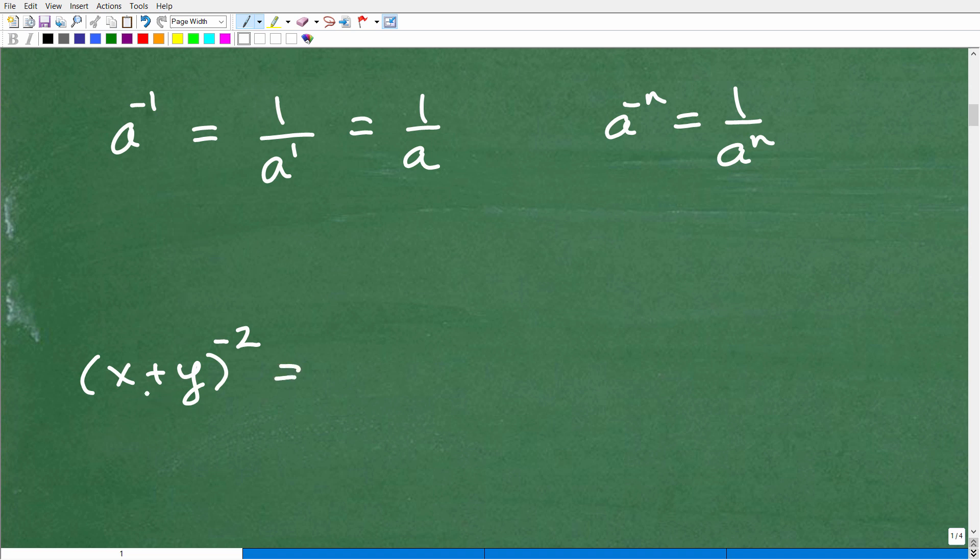So we have x plus y to the negative 2 power. So you're like, ooh, what's going on here? Do I distribute this negative 2 in? No, what you need to recognize is that this x plus y is the base, okay? It's this whole, let's make sure you understand this. x plus y is the base. So that's like a, this is like our a to the n, okay? So if that's the case, what are we going to do?